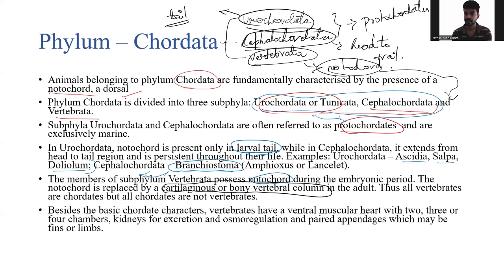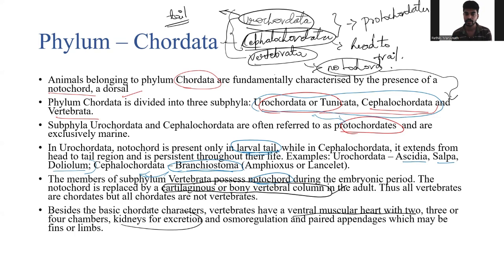All vertebrates are chordates, but not all chordates are vertebrates, because there are two other subphyla. Besides basic chordate characteristics, vertebrates have a ventral muscular heart divided into two, three, or four chambers. There is a well-developed kidney for excretion and osmoregulation, and paired appendages — forelimbs or hind limbs — are also present.